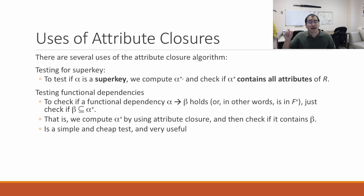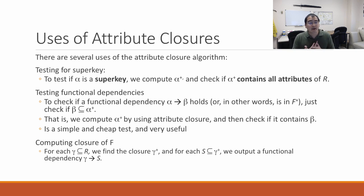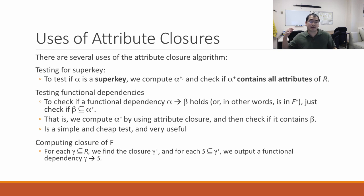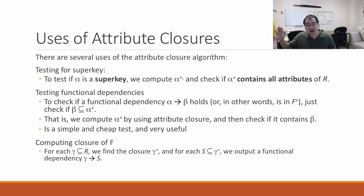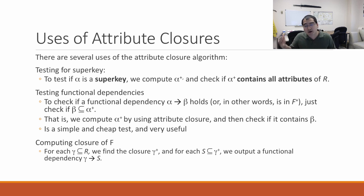Another approach is: for every subset of R, compute the attribute set closure, and for every subset of that result, you get a functional dependency. Basically, for every possible attribute set, find all the things you can infer — and all of those are functional dependencies. You keep doing this until you've found them all.